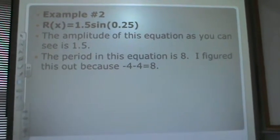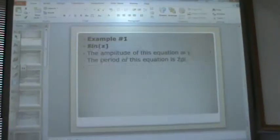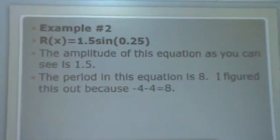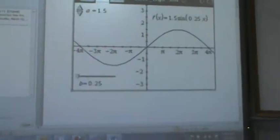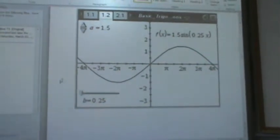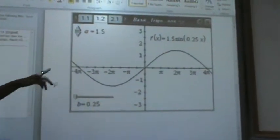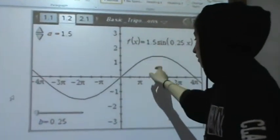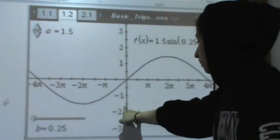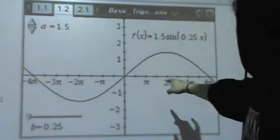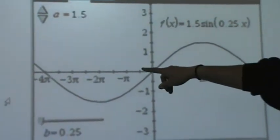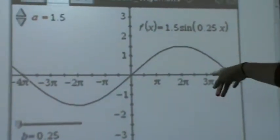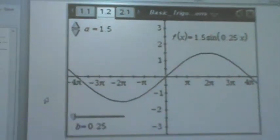I figured this out because negative 4 minus 4 equals 8, and graphing the equation shows 1.5. As you can see, the highest point is at 1.5 for both of them. And as you can see, it goes from 4 to negative 4, which is 4 minus negative 4, which gives me 8. And that is how I found my period.